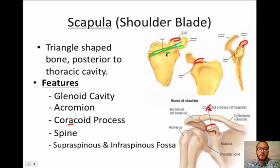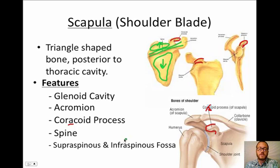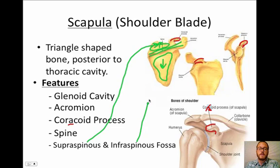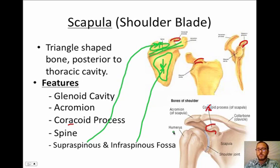The next features are the supraspinous and infraspinous fossae. A fossa is a shallow depression. There's one fossa below the spine and one above. Since 'supra' means above, the supraspinous fossa is the one up here, and the infraspinous fossa is the one down there. Muscles sit in these fossae — for example, the infraspinatus and the supraspinatus.